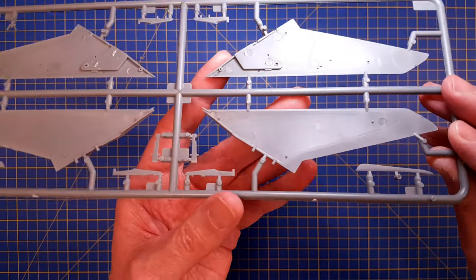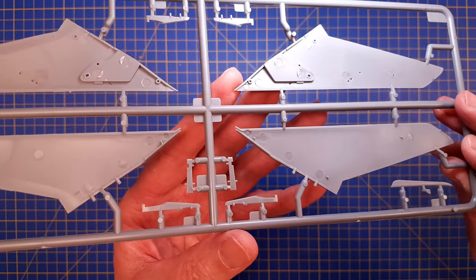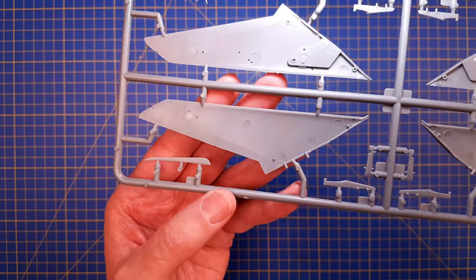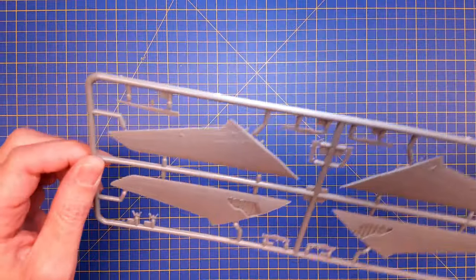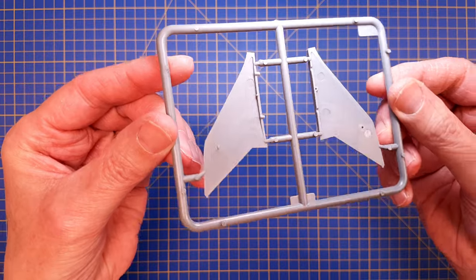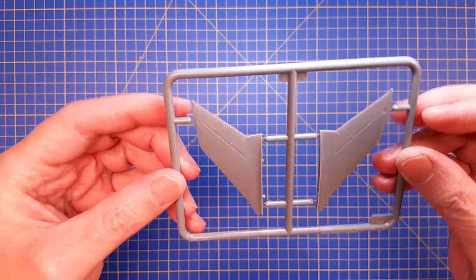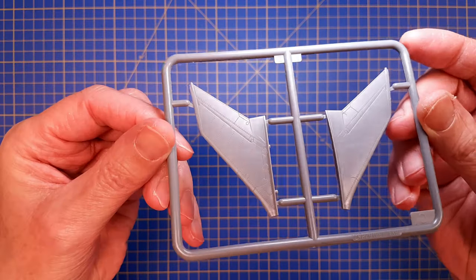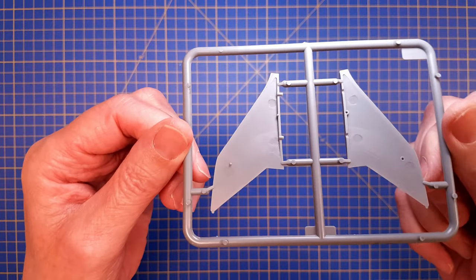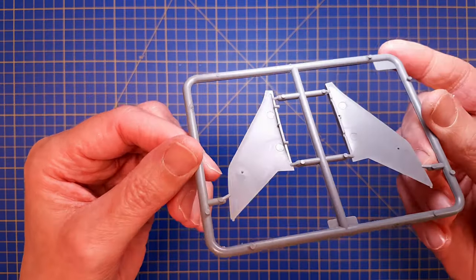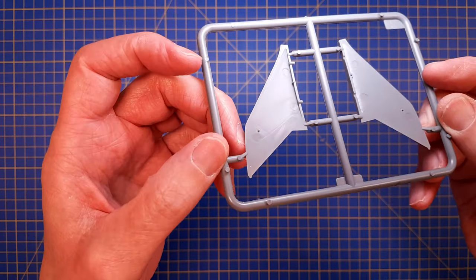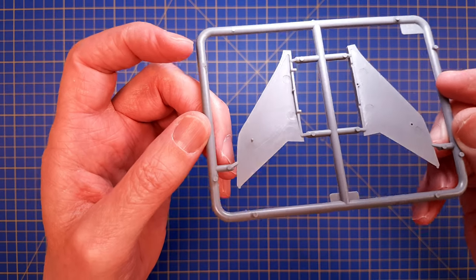Here we have the vertical stabilizer or tail fin - a two-part piece that you glue together. Everything looks really nice with no protruding ejection pin marks, so it should go together without any issues.